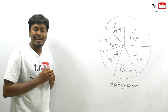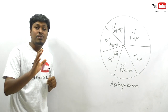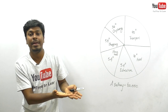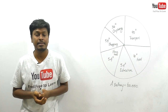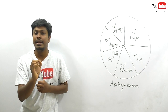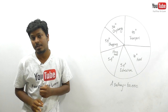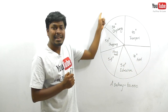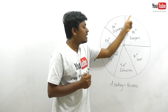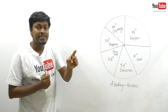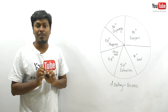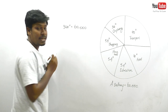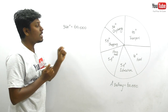For degree-based DI problems, the first 30 seconds are the most important. Spend those 30 seconds properly — even though there are five questions, this setup saves you time on all of them. We know the entire pie chart is 360 degrees, and the overall salary is 60,000, so we can say: 360 degrees = 60,000.